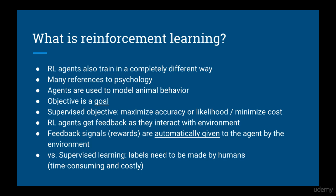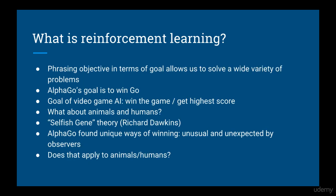So in this way, reinforcement learning is very different from supervised learning. Supervised learning requires a hand-labeled data set, whereas reinforcement learning learns automatically from signals in the environment, so there is no need for hand-labeled data. Let's expand on this idea of a goal. Phrasing our objective in terms of goals allows us to solve a much wider variety of problems.